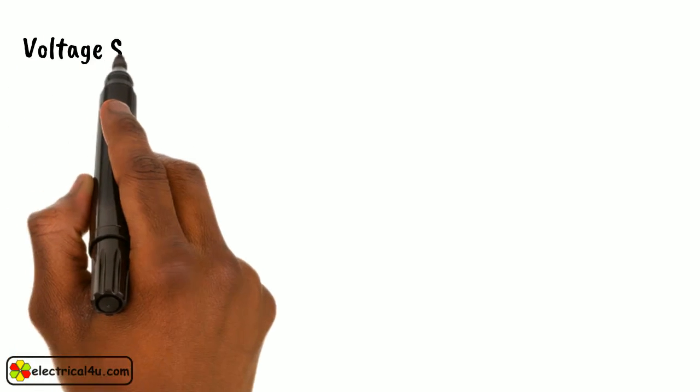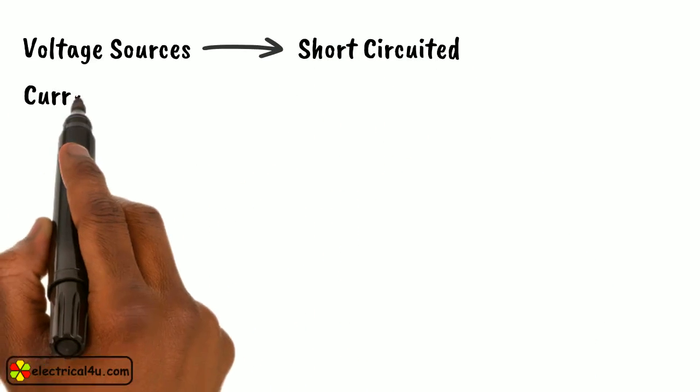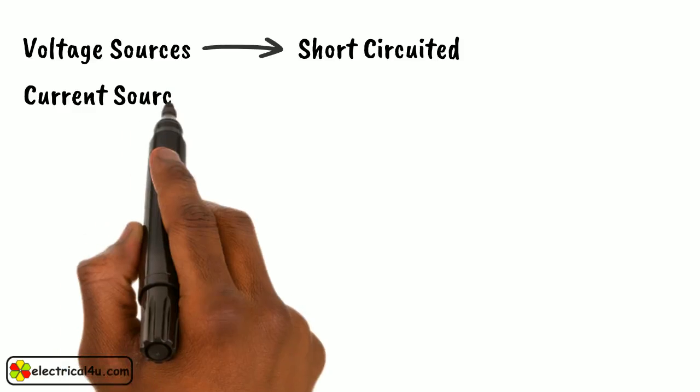In case the internal resistance of a source is not provided, the voltage sources will be short-circuited, and current sources will be open-circuited.